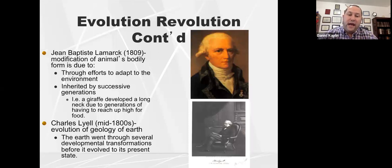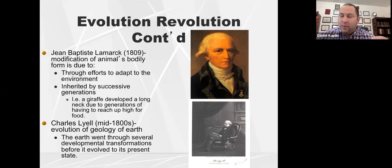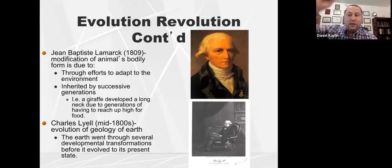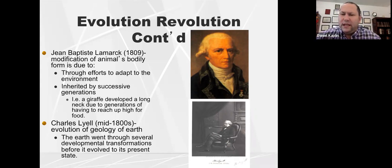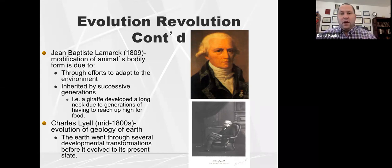We also have Lamarckian evolution. We don't agree with Lamarckian evolution, but there was a discussion happening about evolution in the 1800s. Lamarck felt that an animal's body modified itself based on its needs. He used the giraffe as an example — the giraffe needs a long neck to reach the leaves at the top, so with great effort the giraffe's neck became larger, and that was inherited from generation to generation. Ultimately we don't adopt that theory, but if you've ever heard that a giraffe's neck evolved to reach the top leaves, that's Lamarckian evolution.